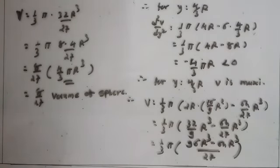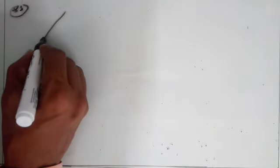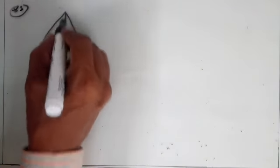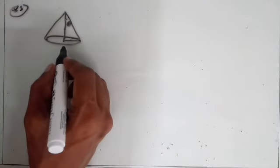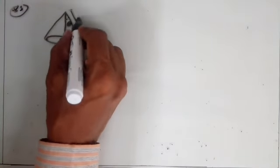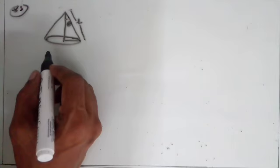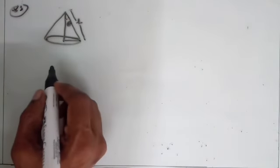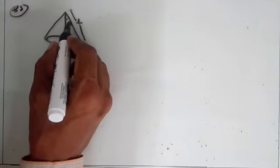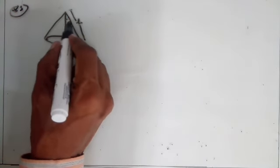Now Question 25: Show that the semi-vertical angle of the cone of maximum volume and given slant height is θ = tan⁻¹(√2). Let the semi-vertical angle be θ, slant height be l, height = CD = l·cosθ, and radius = DB = l·sinθ.